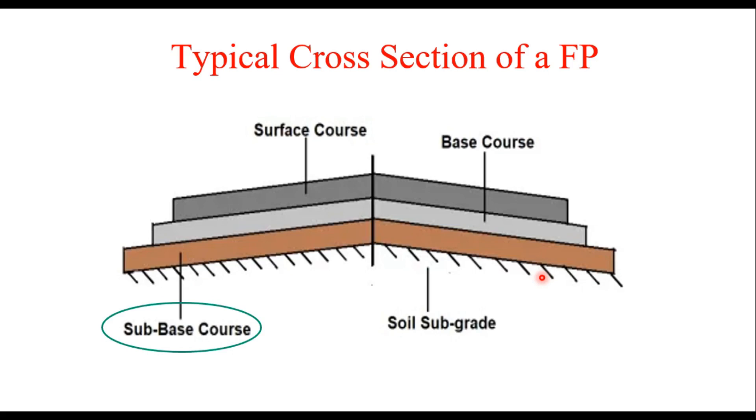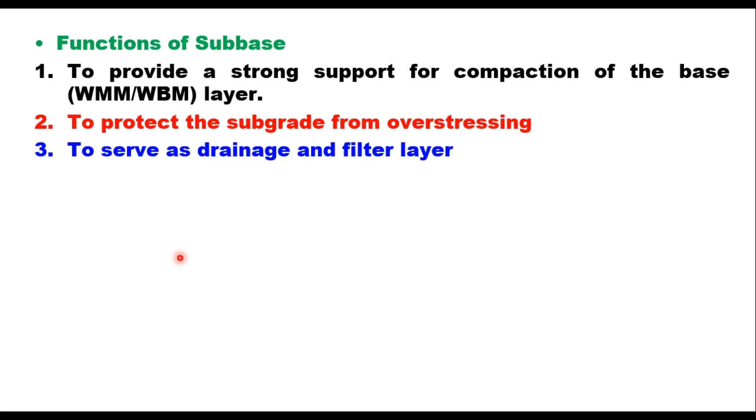In the design of flexible pavement, as you all know, subbase course is the first layer which is provided above subgrade. It is provided to fulfill three objectives: one, to provide a strong support for compaction of the base layer, that is WMM or WBM layer; to protect the subgrade from over-stressing; and to serve as drainage and filter layer.